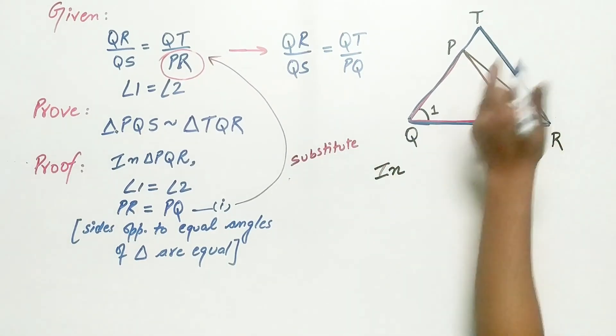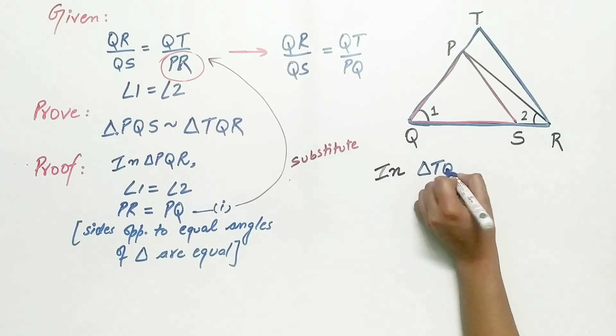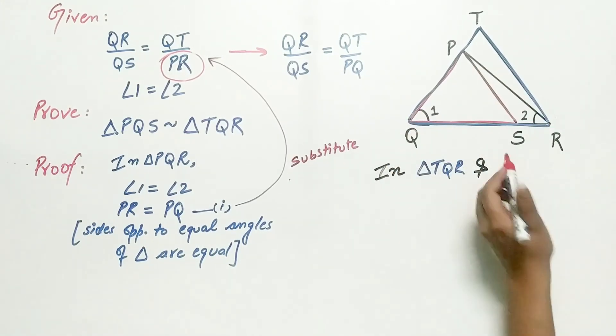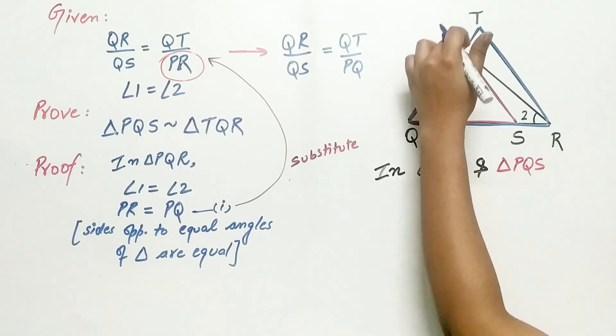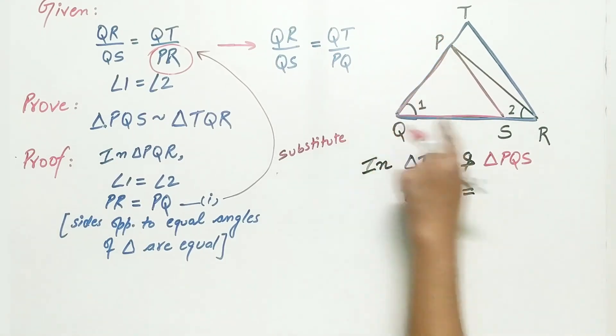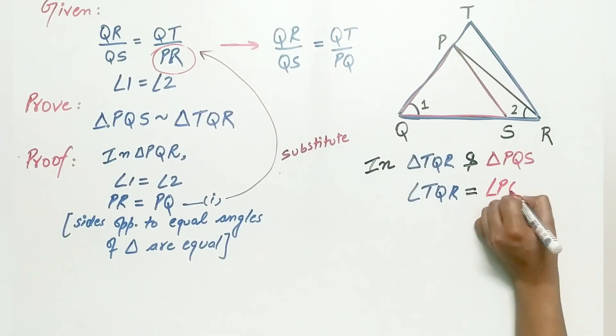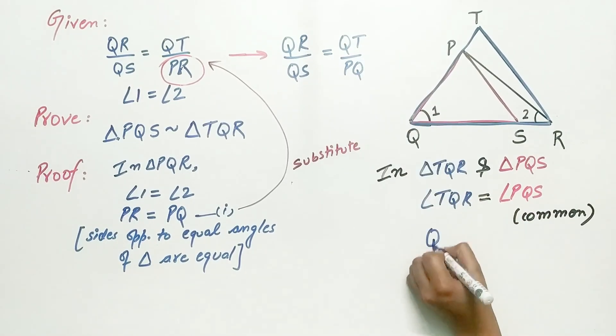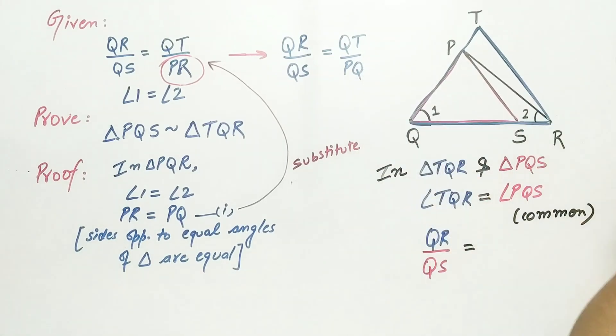In triangle TQR, in triangle PQS, angle TQR is equal to angle PQS, common. Now, QR by QS is equal to QT by PQ.